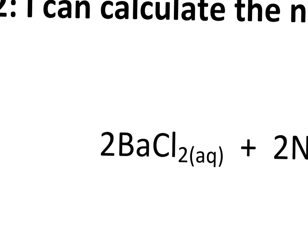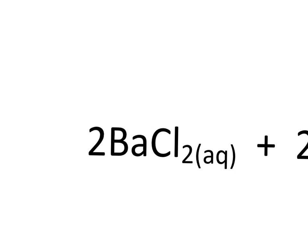So if we look at BaCl₂ in this example, you see two types of numbers. One, you see the coefficient, and two, you see the small subscripts. Don't forget that if we don't see a subscript after a compound, we're going to assume it is one.